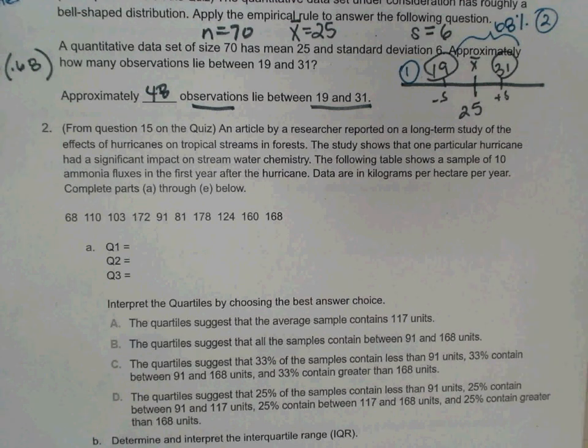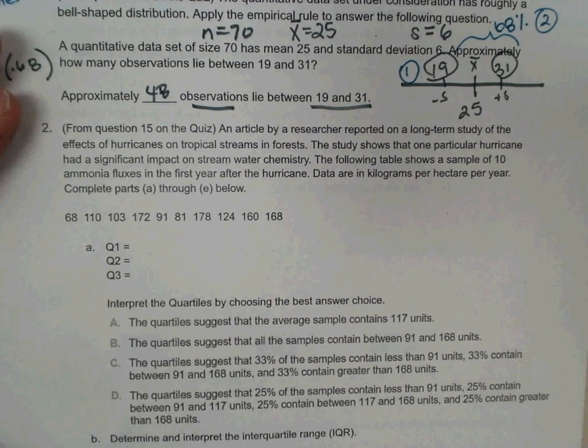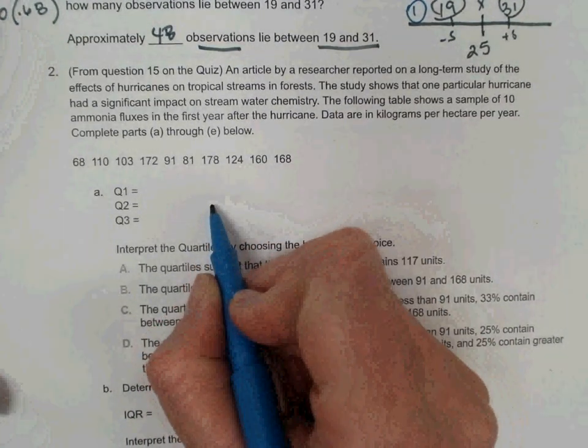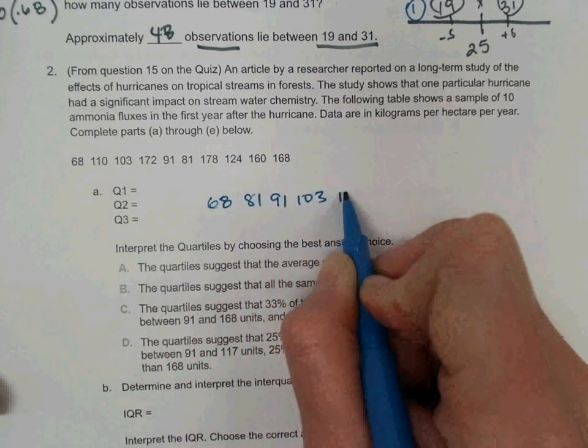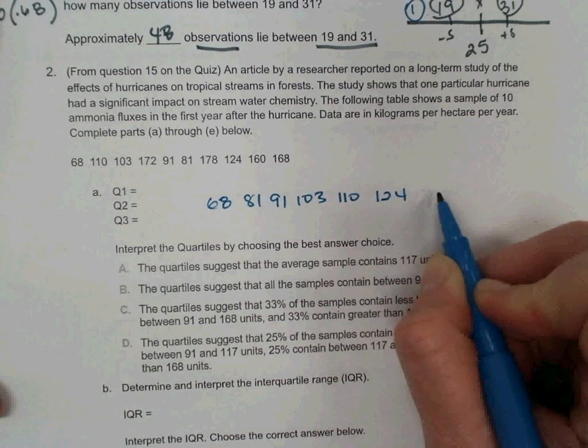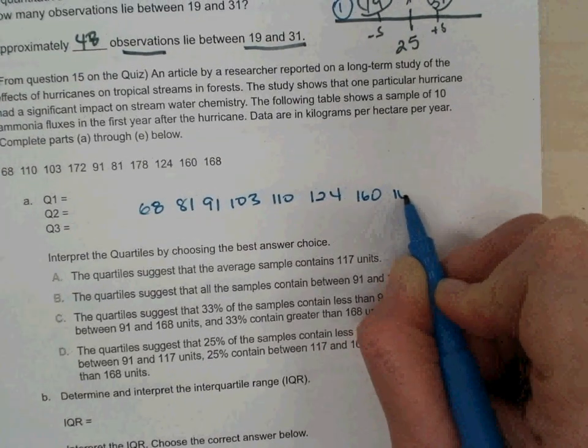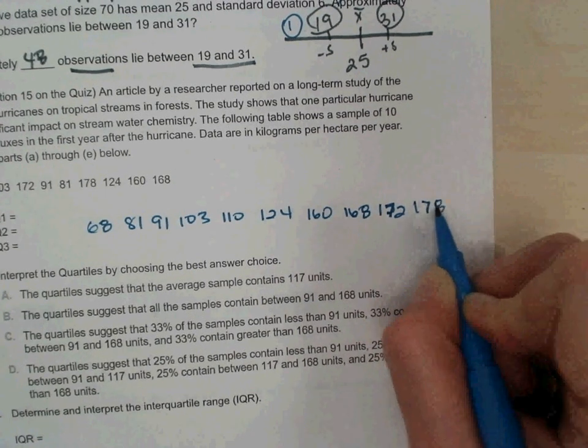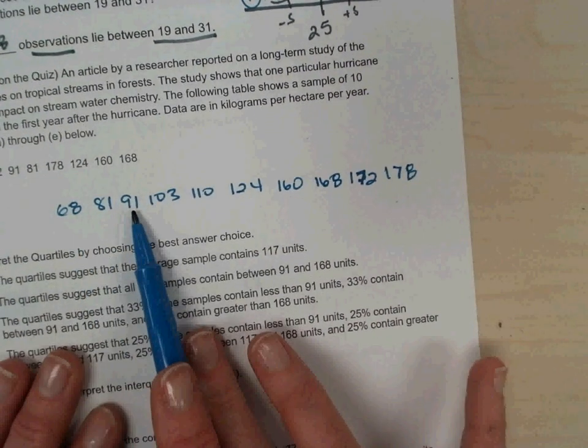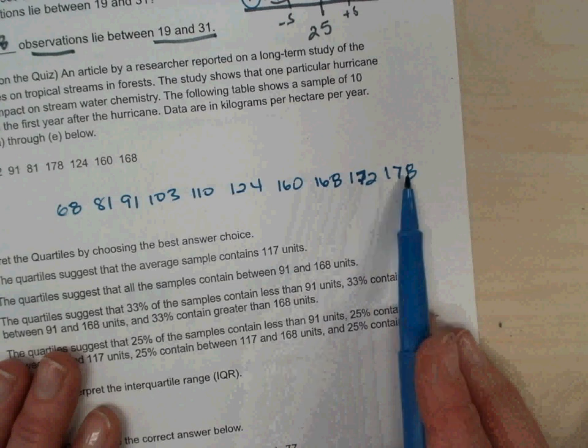So part A is asking for quartiles. So what's the first step in finding quartiles? Put them in order. That's right. What was the order you put them in? 68, 81, 91, 103, 110, 124, 160, 168, 172, and 178. Thanks. I know there's 10 numbers. 1, 2, 3, 4, 5, 6, 7, 8, 9, 10. Got it. Thank you.